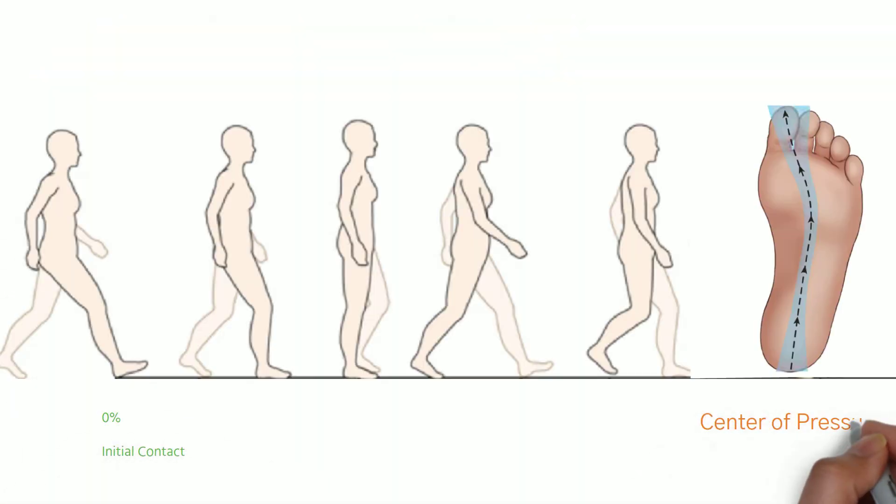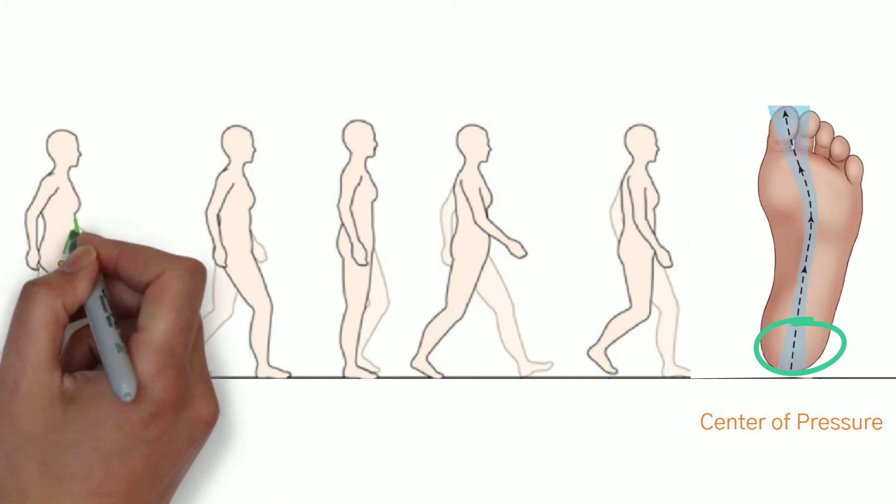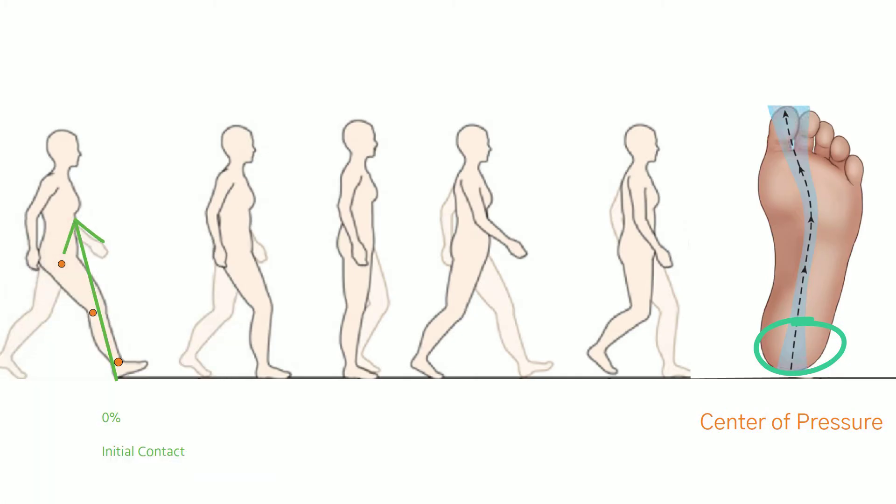At the initial contact, lateral calcaneus contacts the ground. Thus, the ground reaction force is posterior to the ankle joint. The knee is extended, so it lands anterior to the knee and also anterior to the hip.